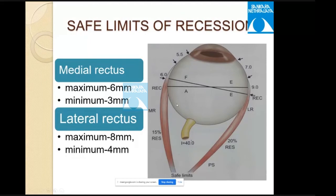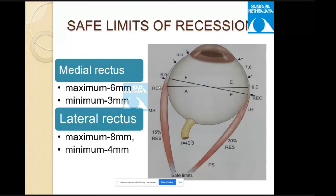Safe limits of recession: the anatomical equator is the widest horizontal equator, different from the functional equator, which is 2 mm anterior for the medial rectus and 2 mm posterior for the lateral rectus. Maximum recession for medial rectus is 6 mm (5.5 mm in children), and for lateral rectus is 8 mm (7 mm in children). Minimum recession is 3 mm for medial rectus and 4 mm for lateral rectus. Beyond the maximum, the muscle ceases to perform its action.